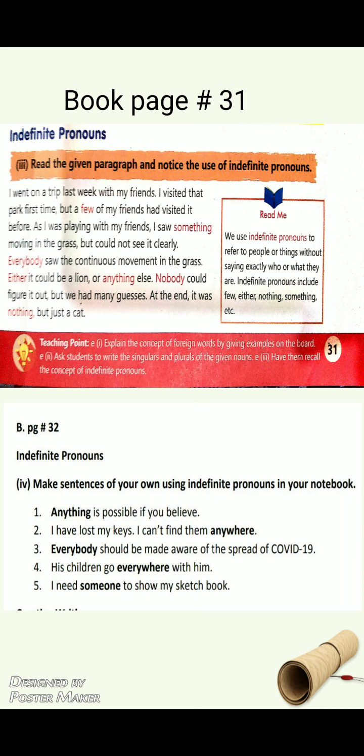Indefinite pronouns refer to people or things without saying exactly who or what they are. They are vague — they don't give exact information. For example, if your teacher says 'one child come here,' one child means anybody from you, any one student. So 'anybody' or 'anyone' — these are indefinite pronouns.